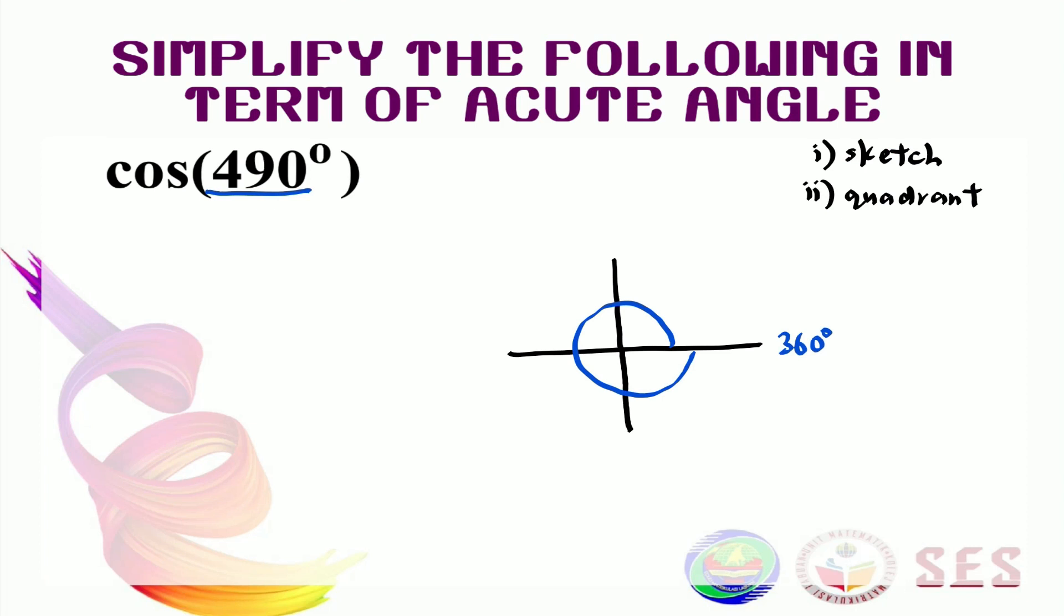So this is 360. This is 450. And this is 540. So 490 would be in between that. So we know that this is in the second quadrant. The third thing is to find its basic angle. Remember this? So this here is our basic angle. Since this is 490 degrees and this here is 540 degrees, that means our basic angle here must be 50 degrees.